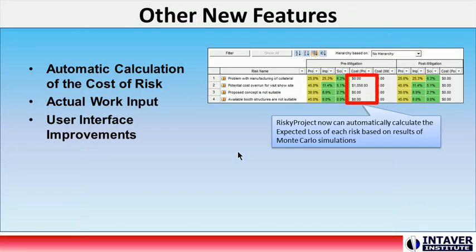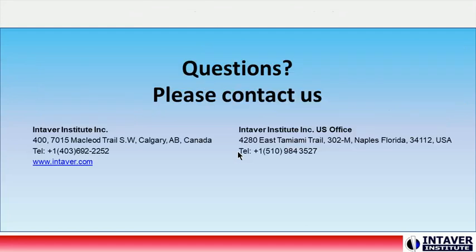Other new features: RiskyProject usability has undergone multiple improvements, including introduction of Microsoft Office 2016 and later UI conventions. In addition, Risk Register usability has been improved, along with automatic calculation of cost of risk and actual work inputs. For more information on our latest release, please contact us at Intaver Institute. Thank you.